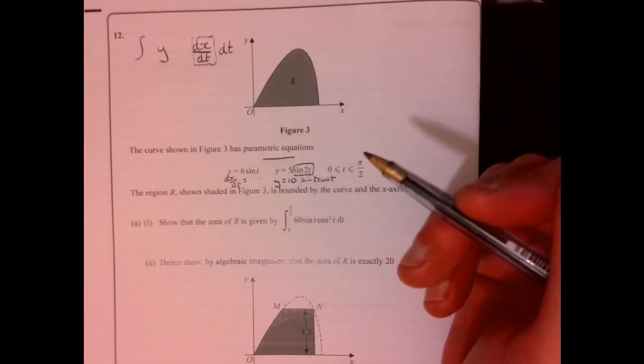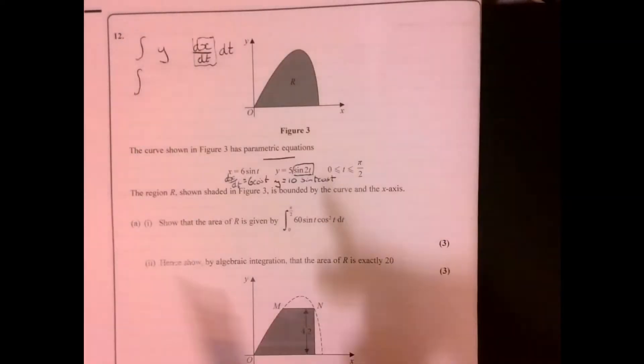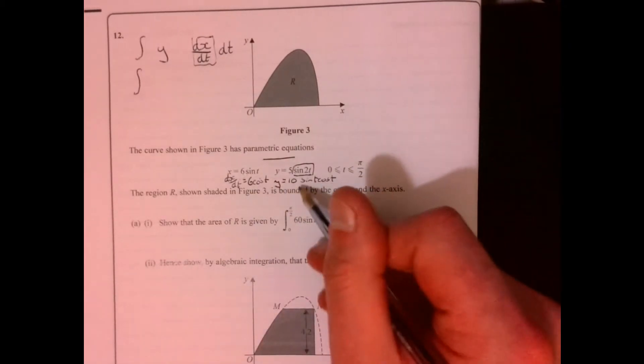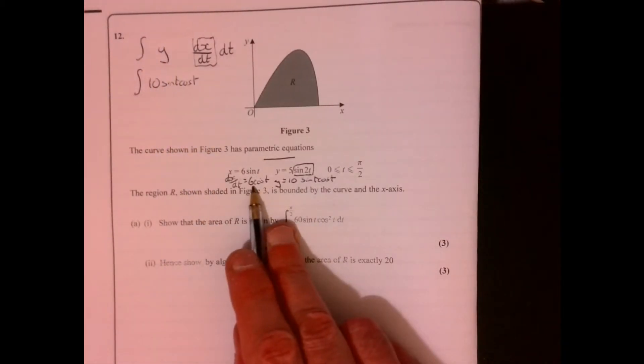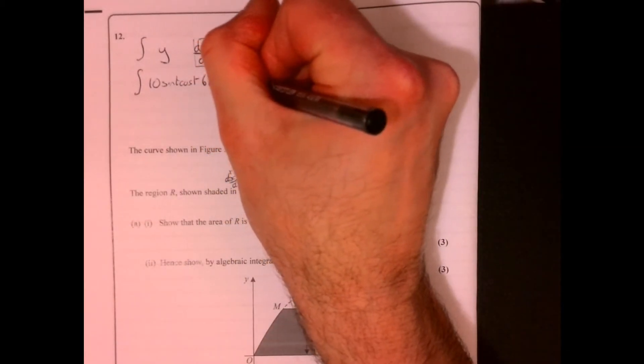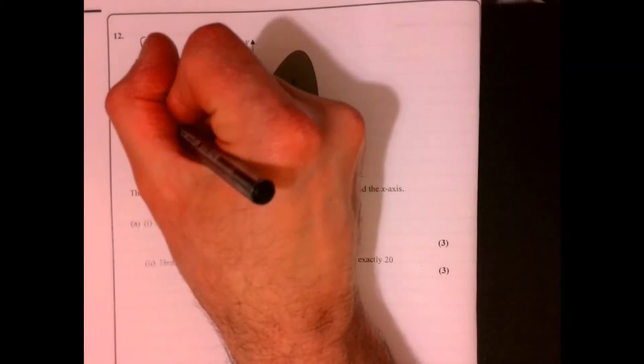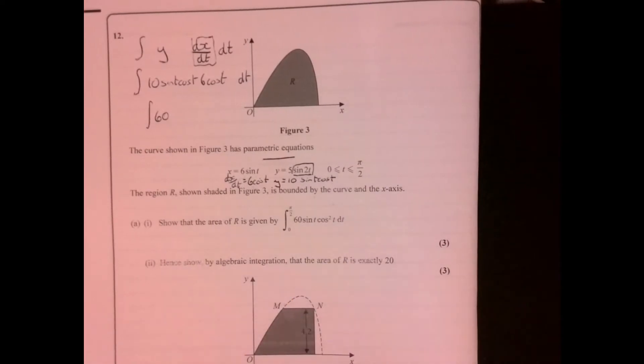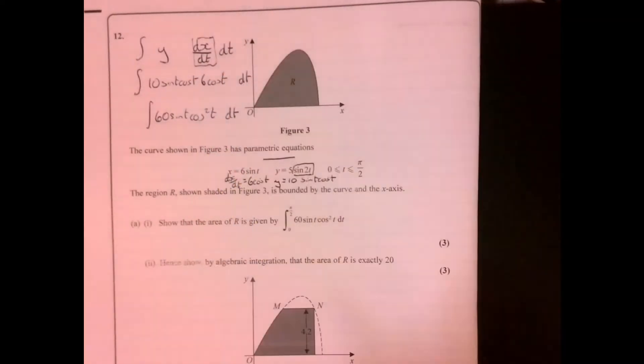Now let's just drop this information in here and see where we are. So we've got these two things multiplied together, so y is 10 sine t cos t and dx over dt is 6 cos t, and all of that is with respect to t. Tidy this up, 10 times 6 is 60, and then we're going to have cos squared. Oh look, it's looking just like this down here, so sine t cos squared, there we go.